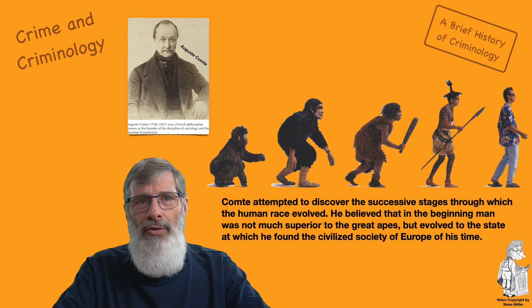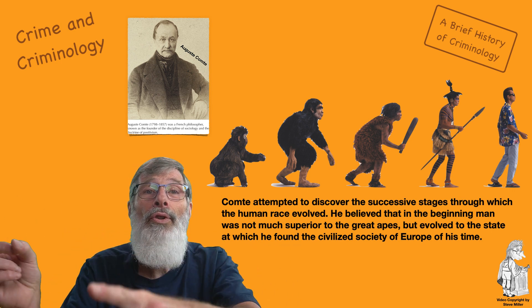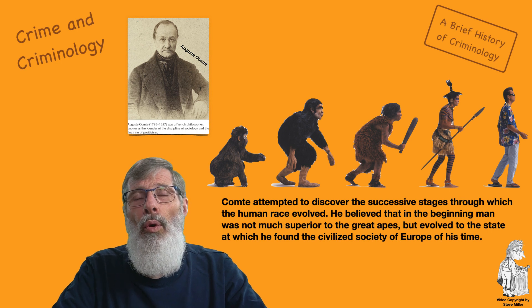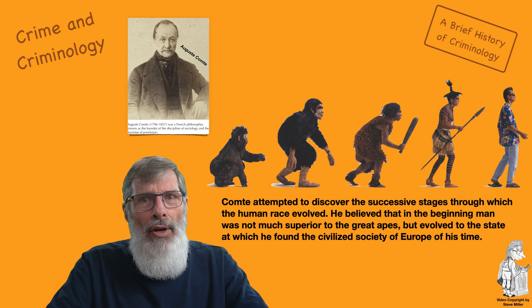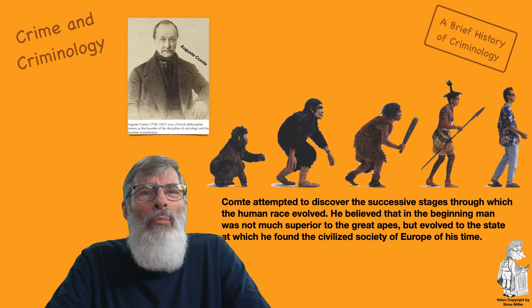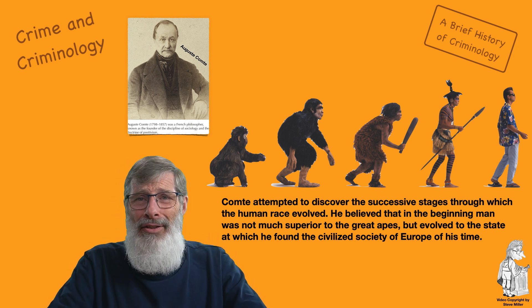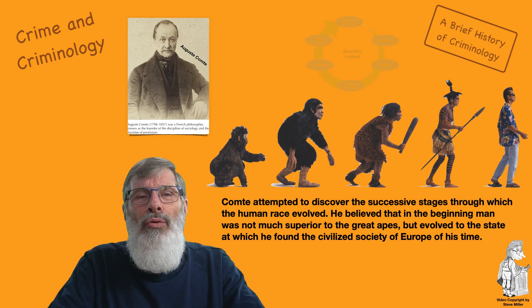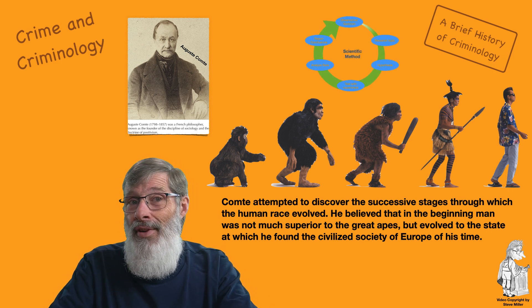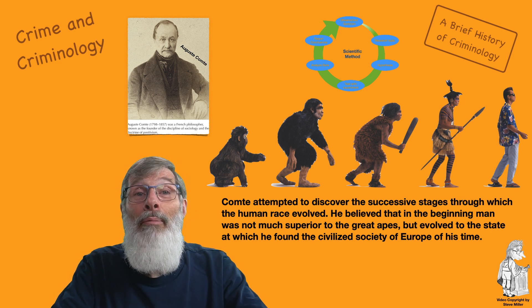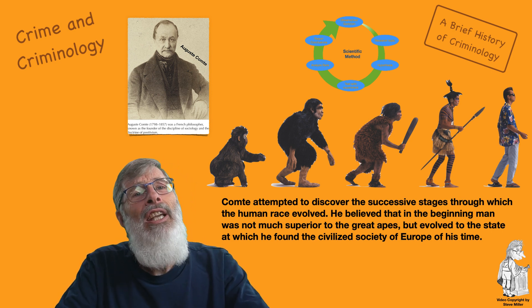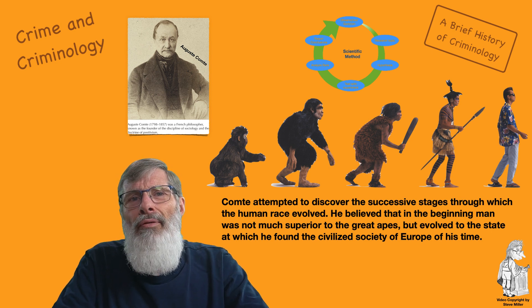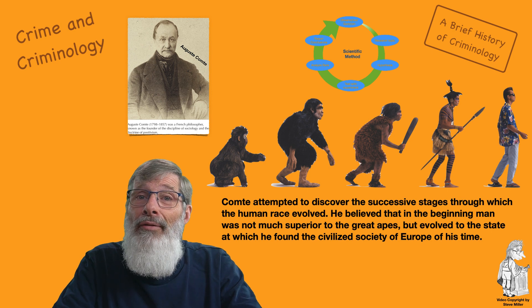There are two main elements to the positivist view. First, all human behavior is seen as a function of external forces often beyond the individual's control — things like wealth, earning power, politics, government, war, famine, and other people. We often react rather than freely choose. The second element is reliance on the scientific method — things accepted must be scientific and evidence-based. This became very critical. We'll review a couple of branches of positivist criminology.